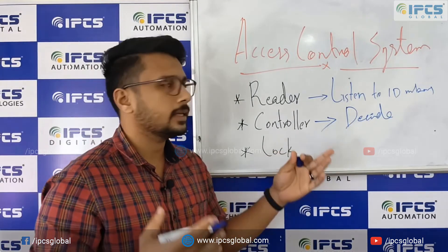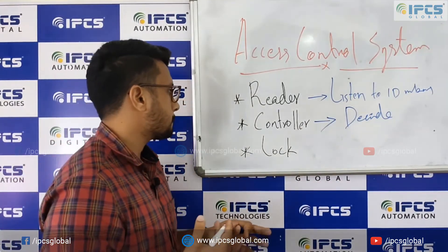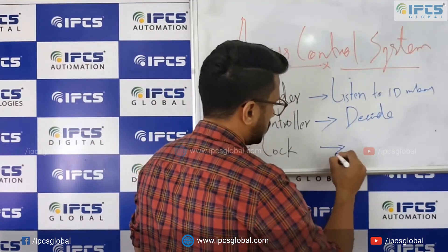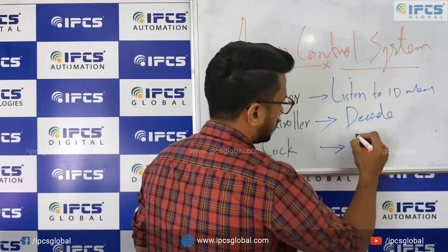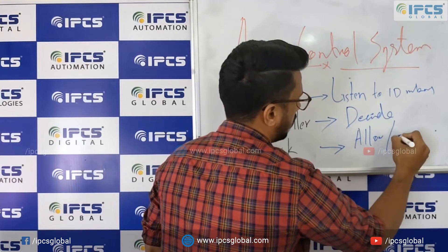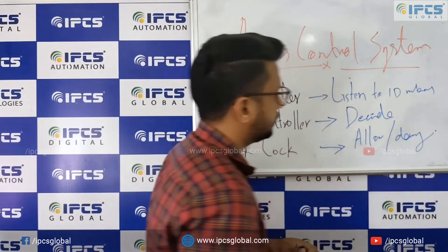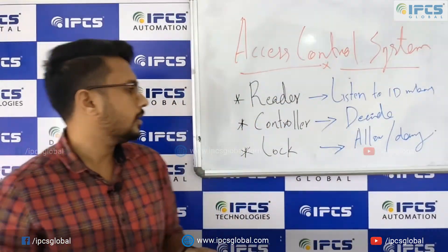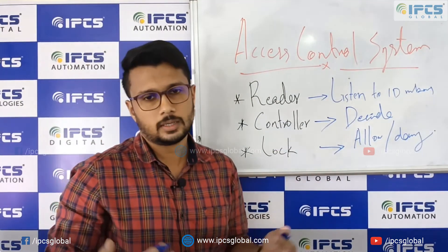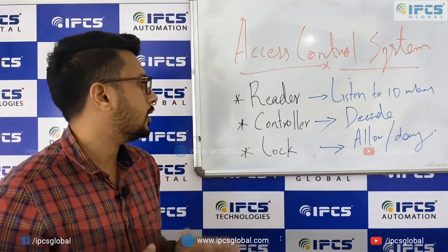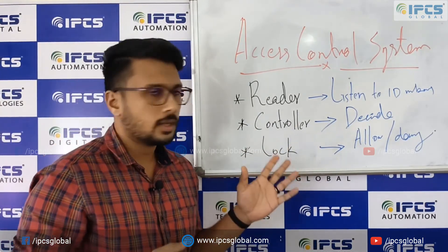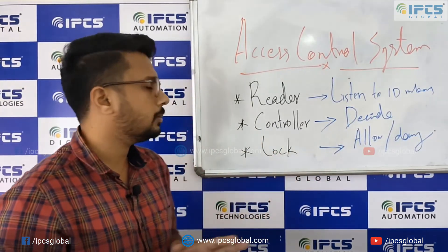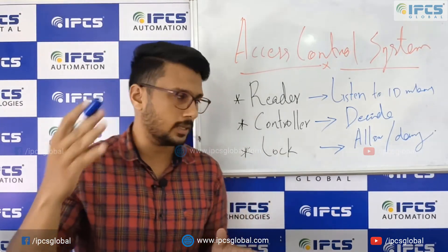The controller will compare the ID numbers and send a signal to the lock. The lock simply allows or denies access — it locks or unlocks. If a user is already defined in the system, the controller will allow the lock to open. This is done by means of a relay mechanism that will be explained in part three or part four.